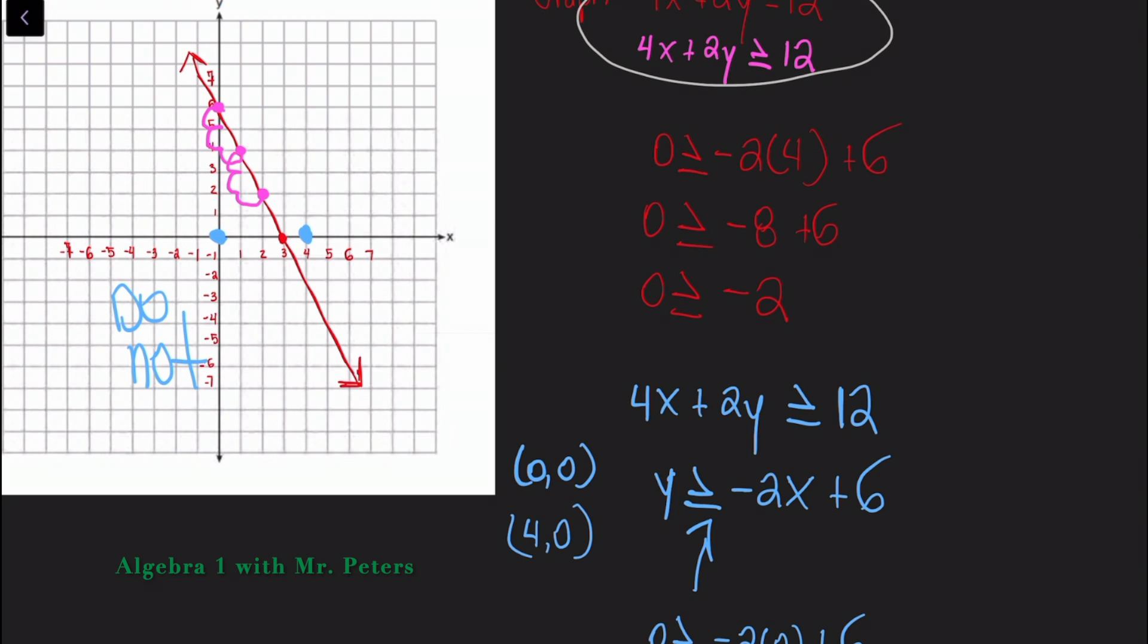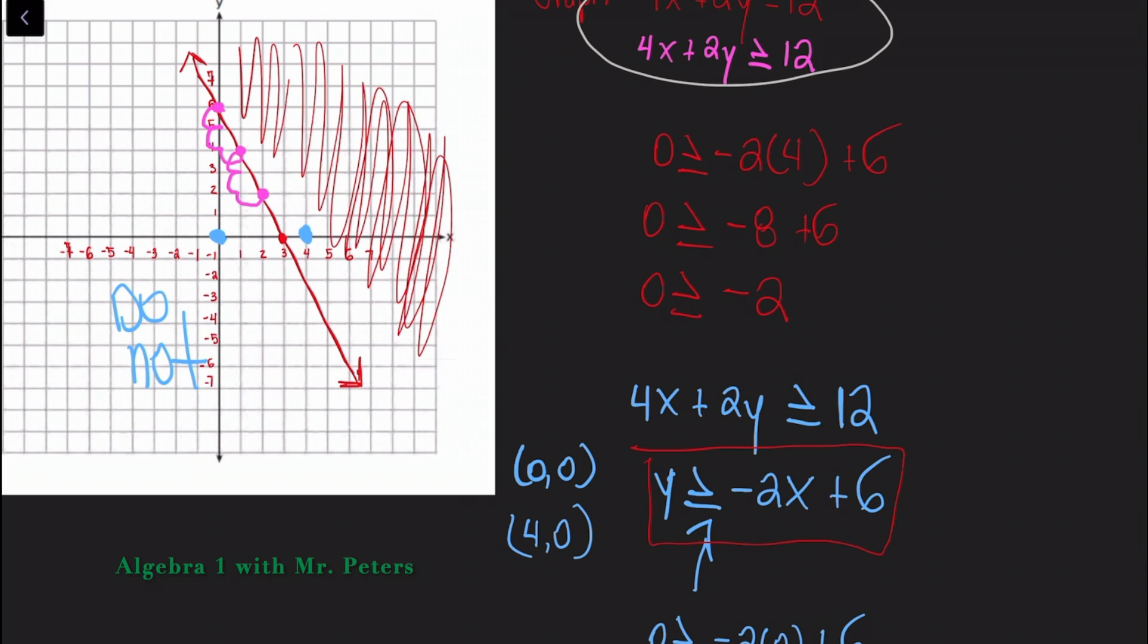So now the point four zero is in the shaded region because it's a true solution. So what does that mean? That means that in this problem we should be shading above this line right here that you see on my screen.